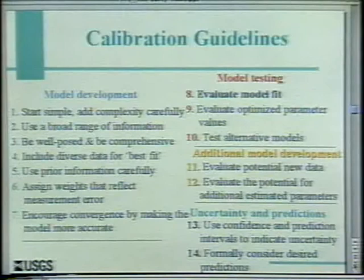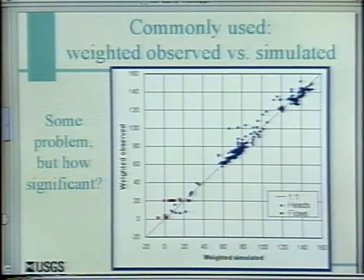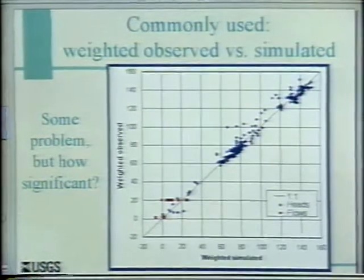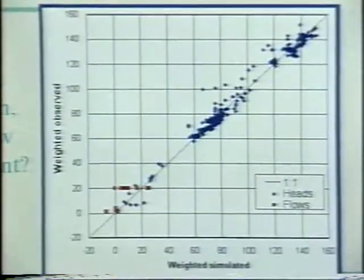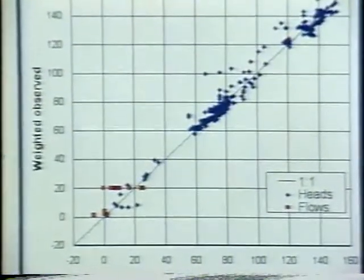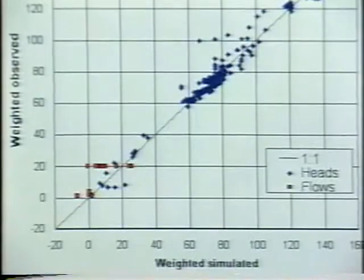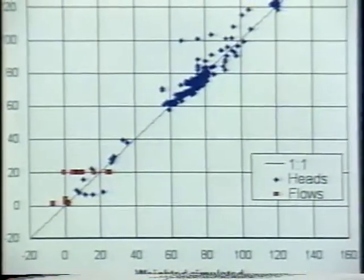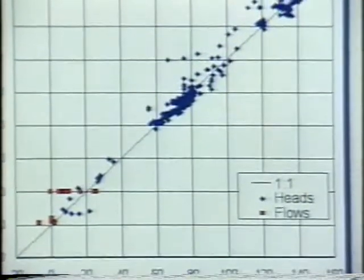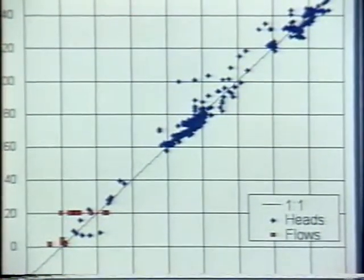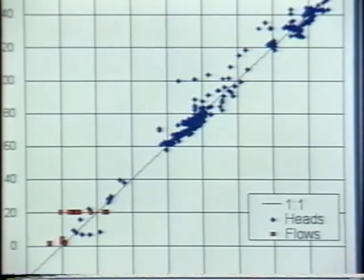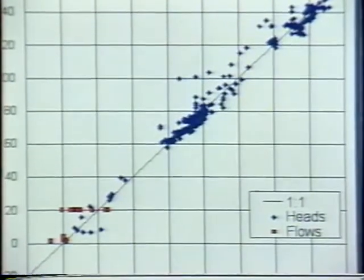Model testing: there's one point on evaluating model fit. This is a commonly used kind of figure — basically simulated versus observed. If you draw a one-to-one line, one hopes that your data line up around that. Here I've plotted the information related to flows and heads for this model, and you can see that there is some kind of problem, but it's hard to figure out how significant that is from this plot. I've weighted them here partly because some flows are like 120,000 cubic meters per day, and you just have to weight them to get them on the same plot.